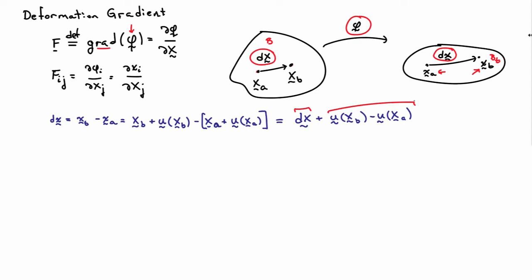Let me do a little bit of manipulation now on those last two terms. The first thing I'm going to do is note that capital XB is equal to capital XA plus dX. That's nothing but the construction that I've placed above. Now what I'm going to do is a Taylor series expansion on this displacement. I'm going to expand U of XA plus dX about the point XA.